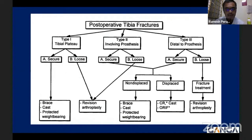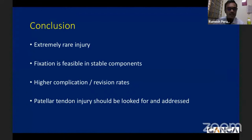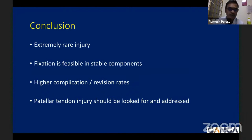As an algorithm: for Type 1, 2, and 3 where the prosthesis is stable, conservative management or locking plate fixation can be used for early mobilization. When the prosthesis is loose, revision arthroplasty is indicated. To conclude, periprosthetic tibial fractures are an extremely rare injury. Fixation is feasible with a stable component, but patients must be counseled about the high complication rate and revision risk of approximately 50 percent. Associated injuries should be looked for and addressed appropriately for a favorable outcome. Thank you all.